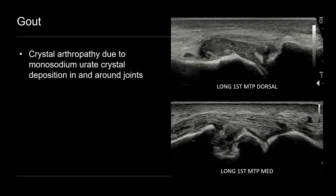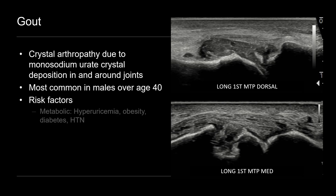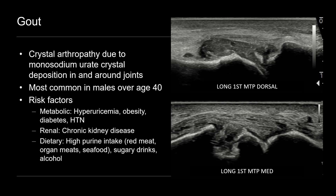Gout is a crystal arthropathy due to monosodium urate crystal deposition that occurs in and around the joints. We see this most commonly in males over the age of 40. Risk factors include hyperuricemia — an elevated uric acid level — obesity, diabetes, hypertension, and chronic kidney disease. Dietary factors include high purine intake found in red meat, organ meats like liver, seafood, sugary drinks, and alcohol. Some patients also have a family history of gout, so there is a genetic component.